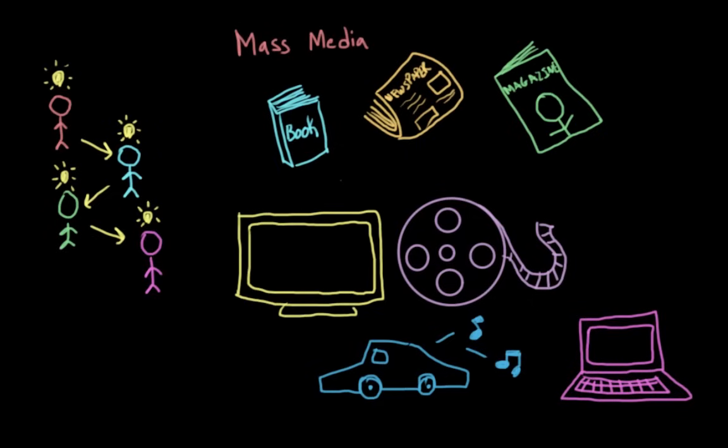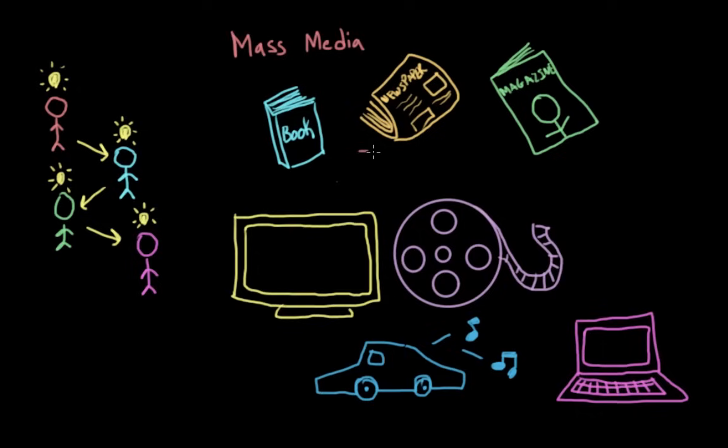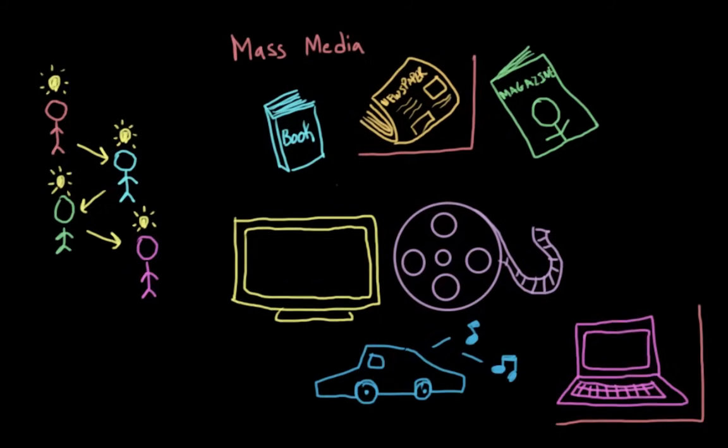Exactly how this media is consumed changes across cultures and age groups. For example, my grandmother gets a lot of her information about current events through TV and newspapers. But I primarily get this information online. And when we look at mass media, we can look at the role it plays in our society through different sociological perspectives.